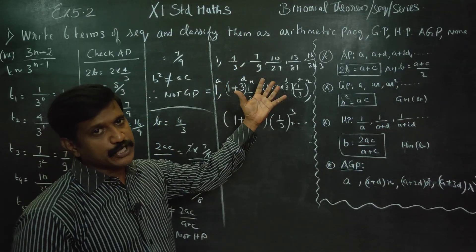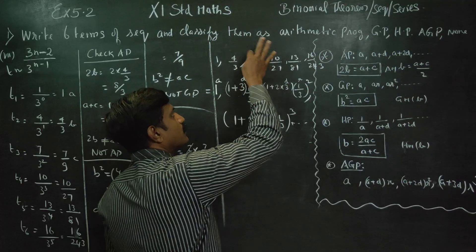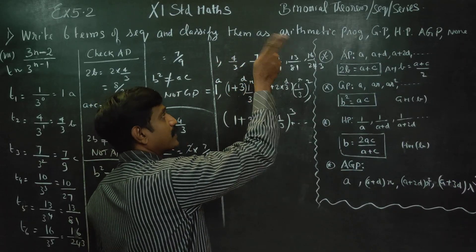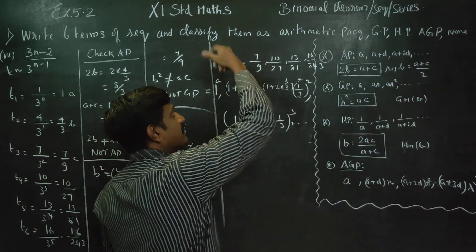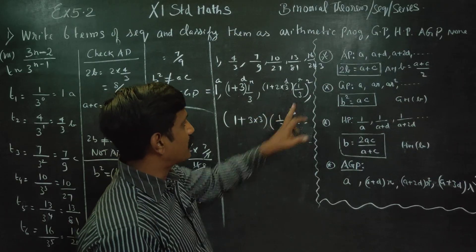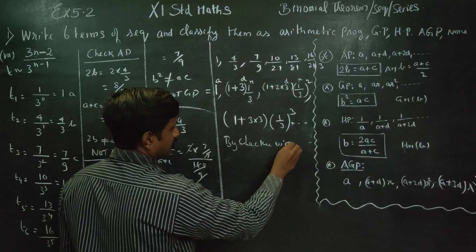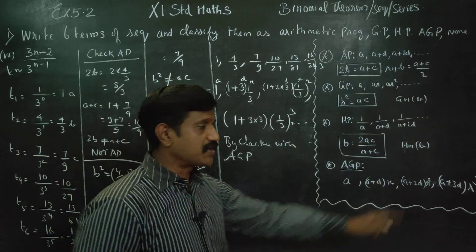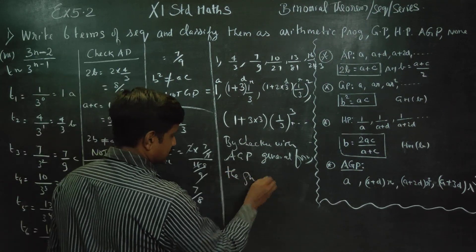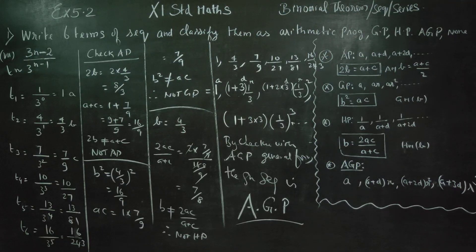This is a typical example of an arithmetico-geometric progression — the numerators form an arithmetic progression and the denominators form a geometric progression. By checking with the arithmetico-geometric progression general formula, the given sequence is confirmed to be an arithmetico-geometric progression. This completes sum number 1. Thank you.